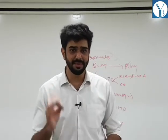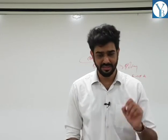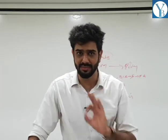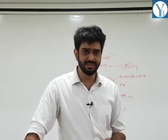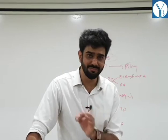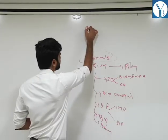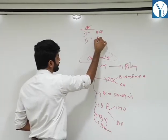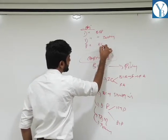Now do one thing — go to the last page of my Chapter 4 notes and write a heading: Objectives. Under that heading, write three sub-points: first, objectives of BCP; second, objectives of BCP testing; third, objectives of BCM policy.